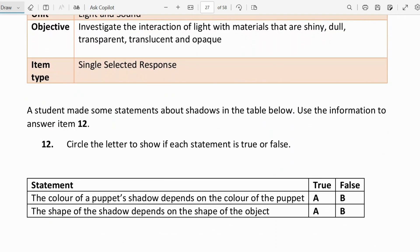Let's look at the next question. A student made some statements about shadows in the table below. Use the information to answer item 12. Circle the letter to show if this statement is true or false. Let's look at the statement: the color of a puppet shadow depends on the color of the puppet. Is this true or false?